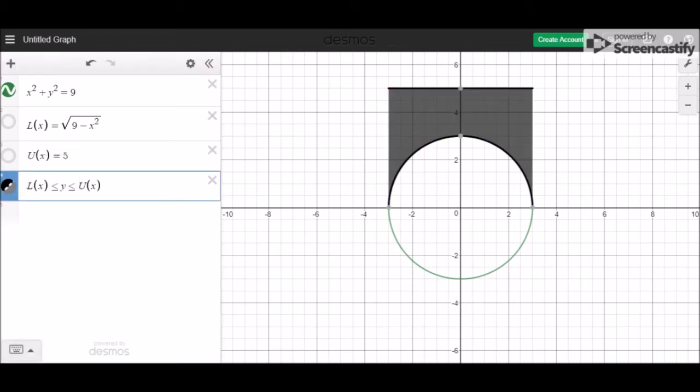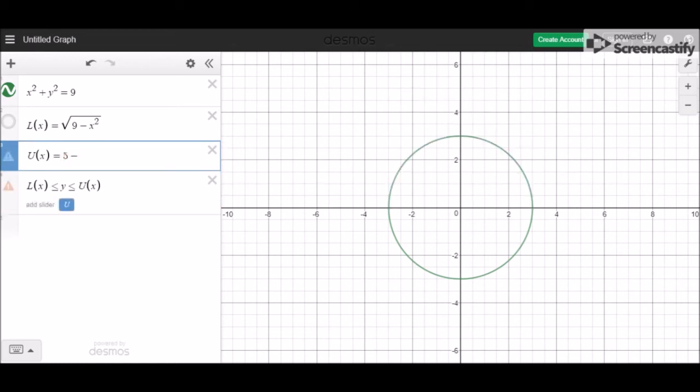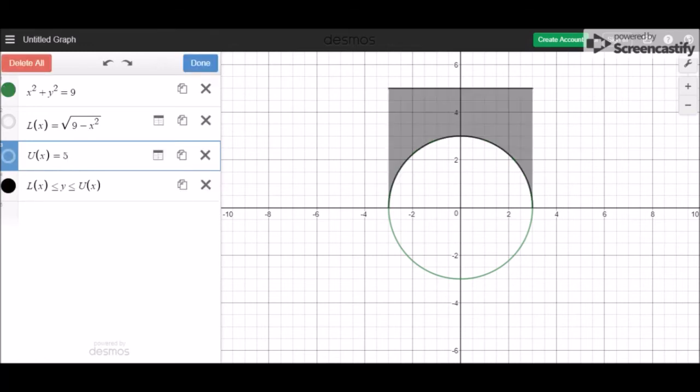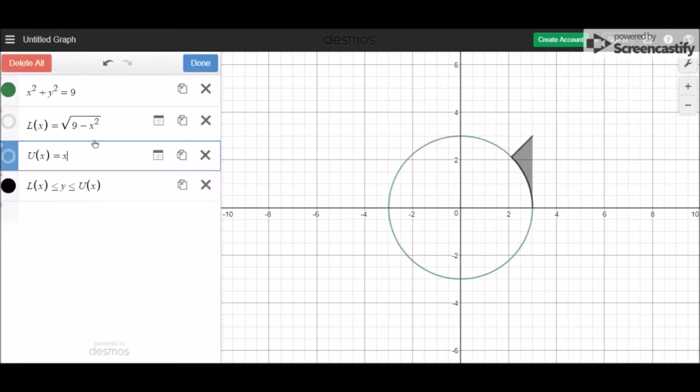You can choose any color you want, and with this upper bound here you can do anything you want. You can do things like a nice wide parabola—let's do x squared over eight plus four.